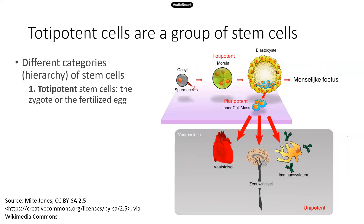Now totipotent cells are a type of stem cell. If we look at the different categories of stem cells, it's really a hierarchy in terms of how powerful the cell can be — which is basically the capability of the cell to differentiate into different types of cells. At the top of this hierarchy are totipotent stem cells. Totipotent means 'all,' so totipotent cells can develop into all kinds of cells in our body.